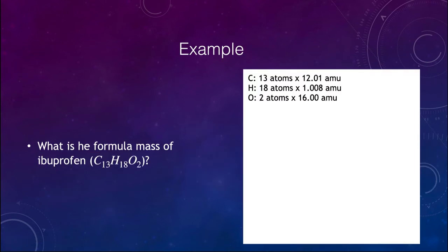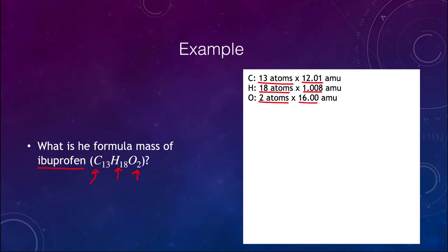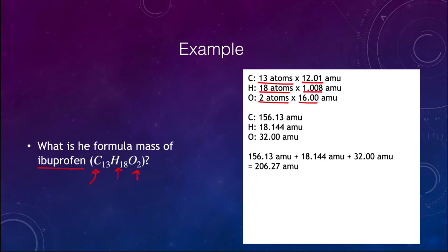As an example, let's look at the compound C13H18O2, which is ibuprofen, a pain reliever. There are 13 carbon atoms times about 12 atomic mass units each, 18 hydrogen atoms times about 1 atomic mass unit each, and 2 oxygens at 16 atomic mass units each. Multiplying and adding those together gives a total formula mass of 206.27 atomic mass units for ibuprofen.